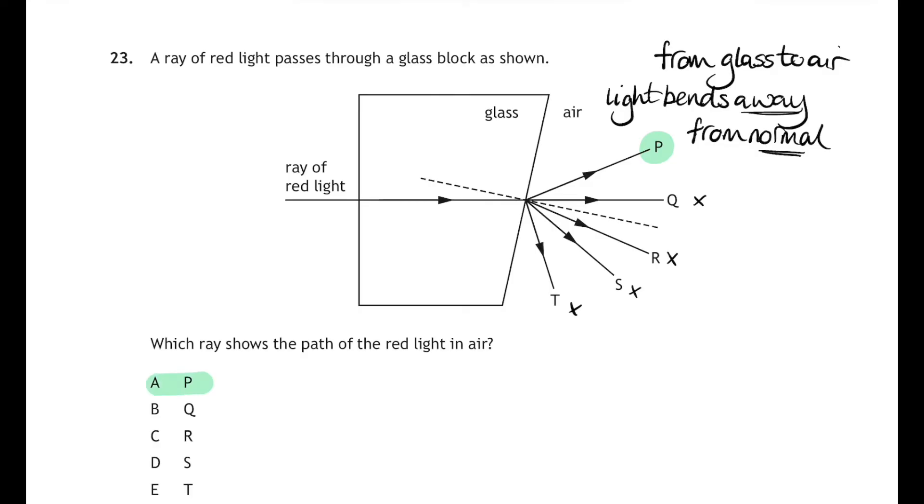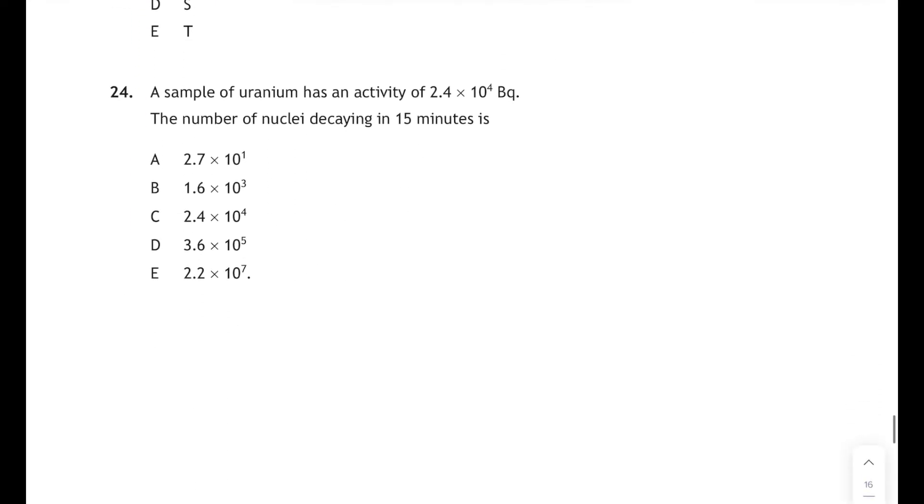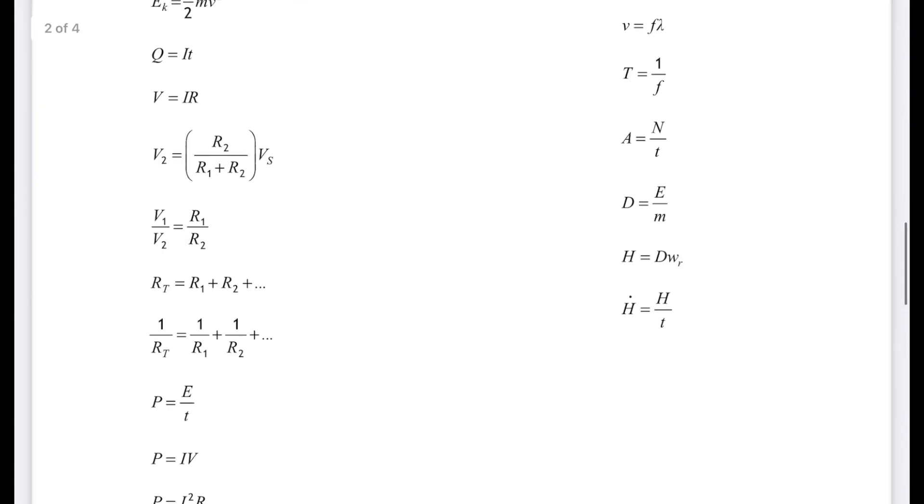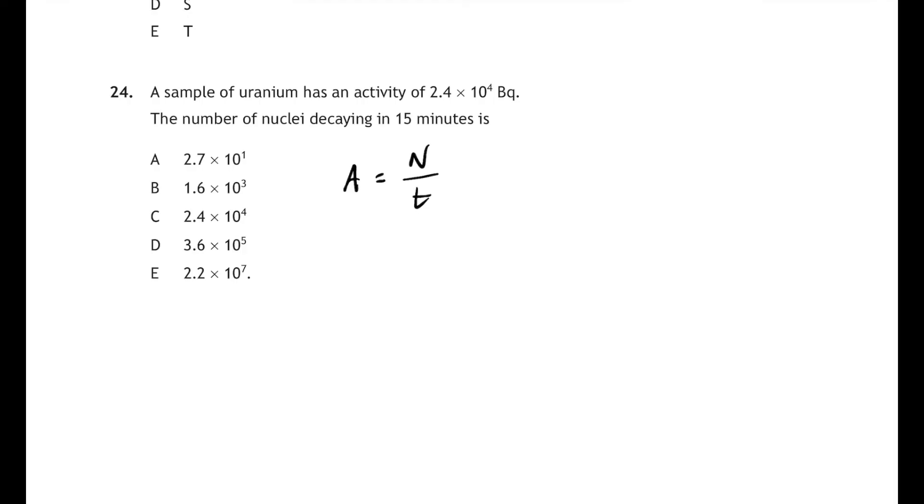Question 24: a sample of uranium has an activity of 2.4 times 10 to the 4 becquerels, and we have to determine the number of nuclei decaying in 15 minutes. Back to the relationship sheet then, and there's our nuclear radiation relationships. We're looking for the first one there: activity is the number of decays divided by the time in seconds. So let's write that down and then rearrange it because we're looking for the number of nuclei decaying in 15 minutes. So the activity was 2.4 times 10 to the 4, and we're multiplying that by the time which was 15 minutes times 60 seconds. Don't forget to multiply by 60, because if you don't, you'll get answer D, which is wrong. So the answer you should be getting is 21 million 600,000, and if you write that in standard form to two significant figures, that's 2.2 times 10 to the 7 nuclei, and that corresponds to answer E.